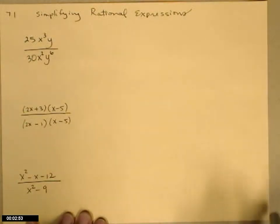Here are three examples from section 7.1 on simplifying rational expressions. So the rule about simplifying rational expressions, I might also use the word reduce or write in lowest terms, is that you can only cancel common factors.